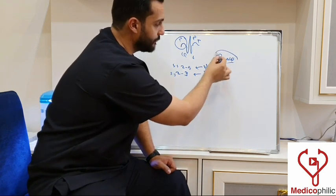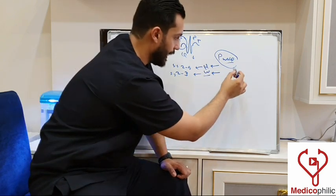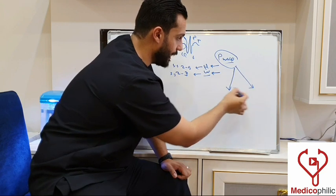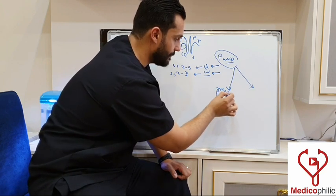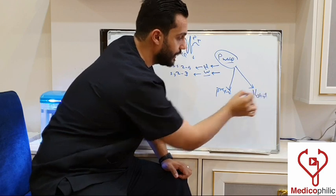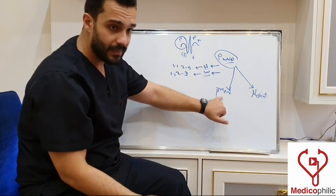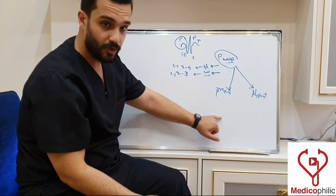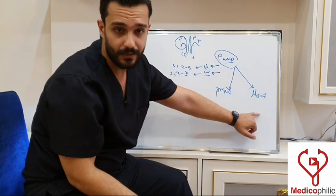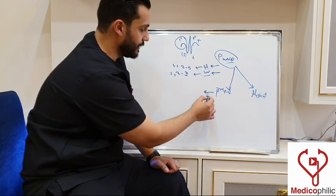P wave abnormalities in the ECG are classified by noticing whether the P wave is present or absent. If the P wave is present in the ECG, there are different abnormalities to consider, and if the P wave is absent, there are different abnormalities as well.